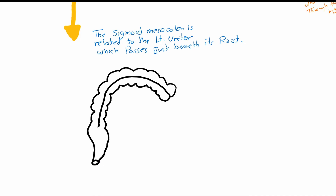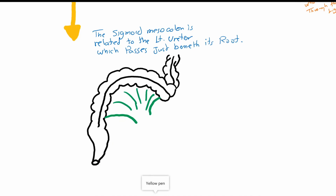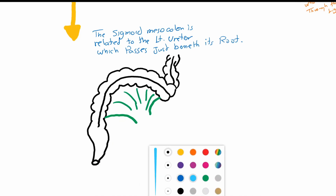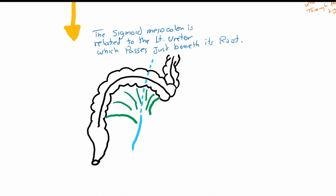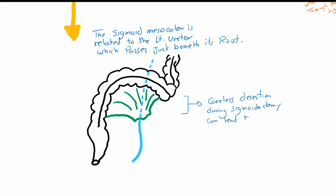Especially in cases of sigmoidal tumors or severe diverticulitis, the sigmoid mesocolon can be shortened due to tissue scarring, leading to pulling the left ureter upwards towards the colon, which can be injured during the dissection of the mesocolon.